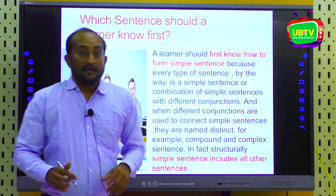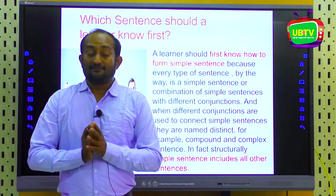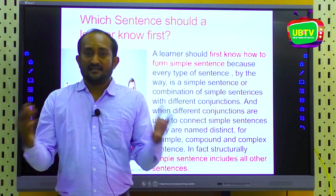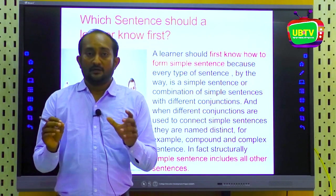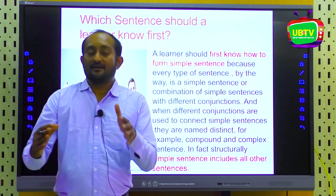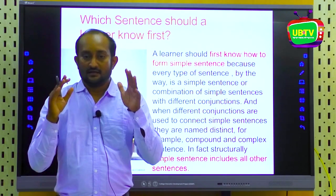Now the question is: we already have a lot of sentence types, and if we sum up, there are 11 categories of sentences already discovered.